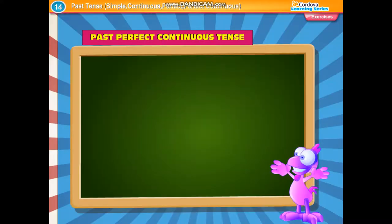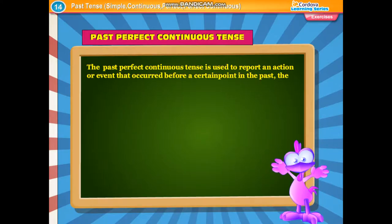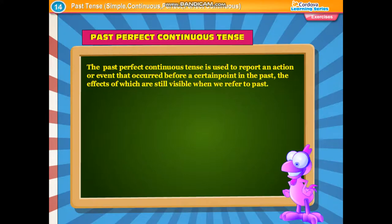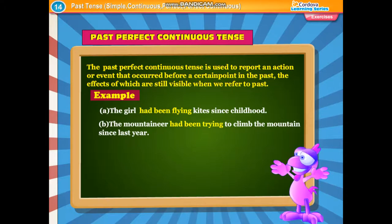Past perfect continuous tense. The past perfect continuous tense is used to report an action or event that occurred before a certain point in the past, the effects of which are still visible when we refer to the past. Examples: The girl had been flying kites since childhood. The mountaineer had been trying to climb the mountain since last year.